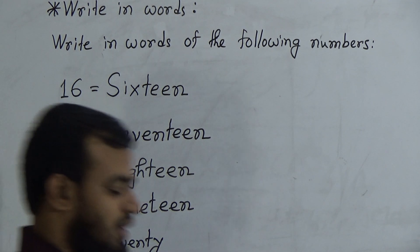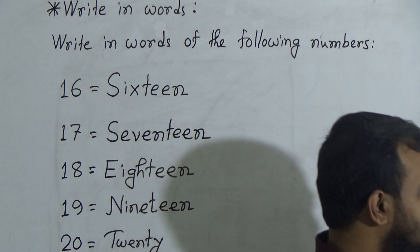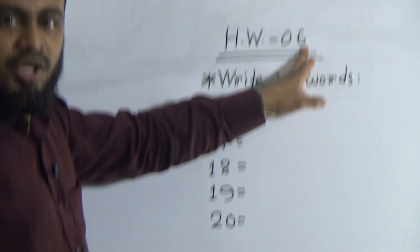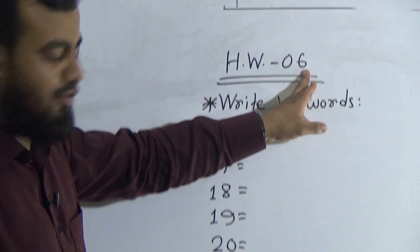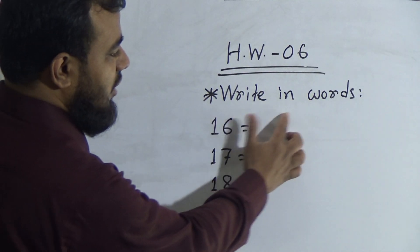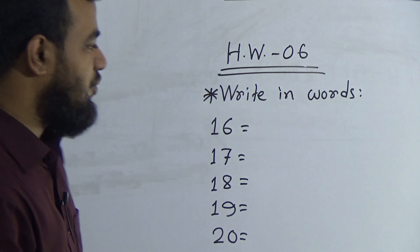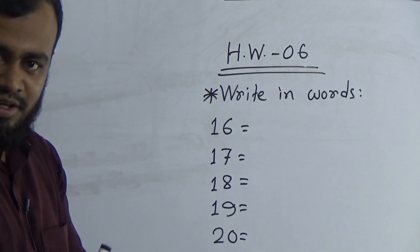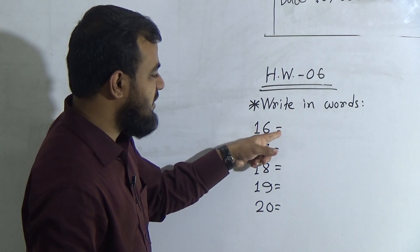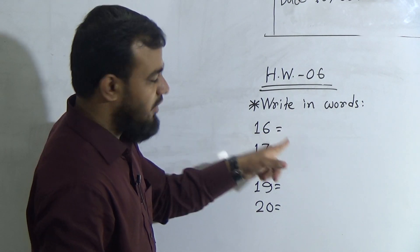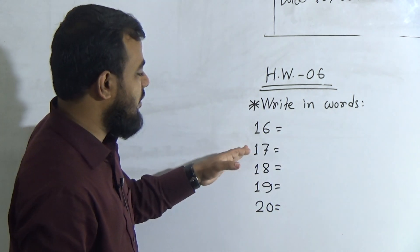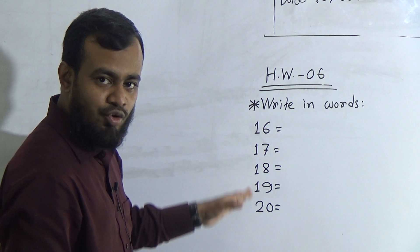My dear students, you have a homework today. Your homework number is 6. You must mention this homework number in your HW copy in the left corner. Write down the topic: Write in Words. Then write down the number, give the equal sign, and write down the spelling — 16, 17, 18 and so on.